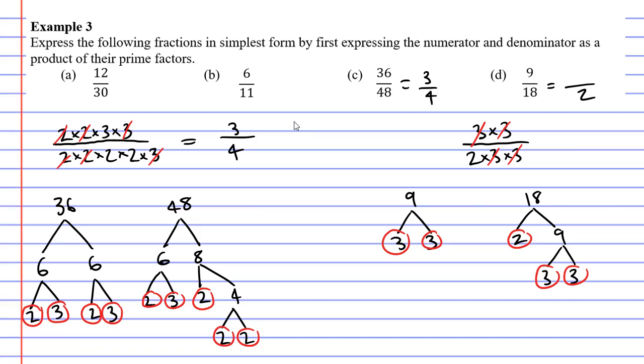And some people make a really big mistake. Some people go, alright, if there's nothing above, maybe I should put a 0. And that's a big mistake. It's not 0.